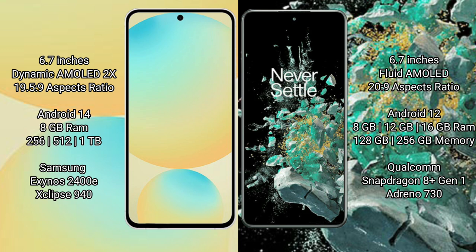Samsung Galaxy S24 FE runs on the Android 14 operating system. OnePlus 20 runs on the Android 12 operating system. Samsung Galaxy S24 FE comes with 8GB RAM and 256GB internal storage.